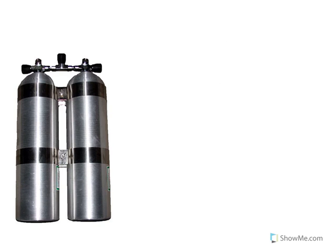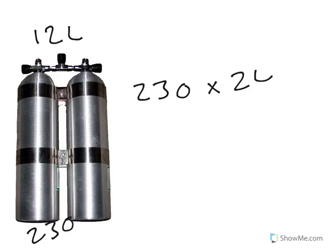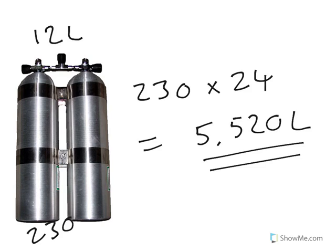So if we look at the same formula for a set of twins, let's just say these are twin 12 liters. Again, filled to 230 bar, it's going to be 230 multiplied by the total cylinder capacity, which, of course, is 24, because we've got two 12s. And that's going to give us a total gas supply of 5,520 liters of gas.